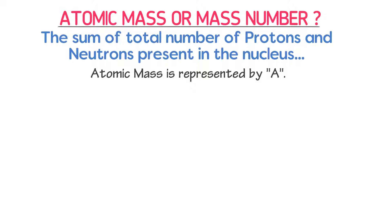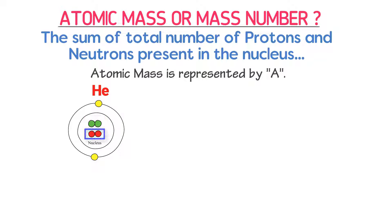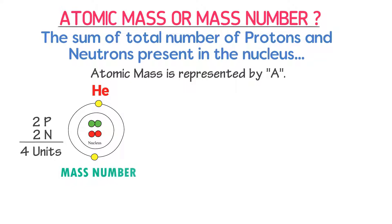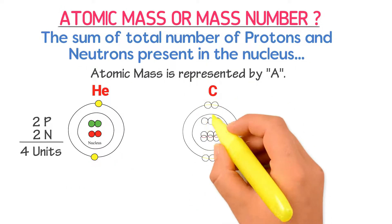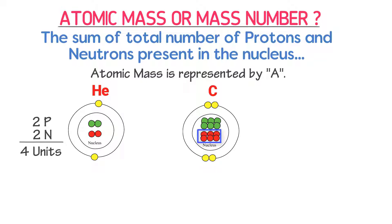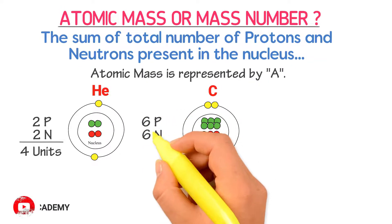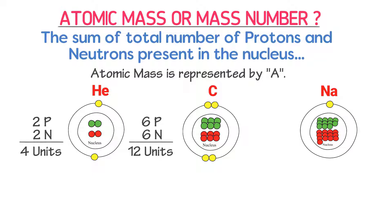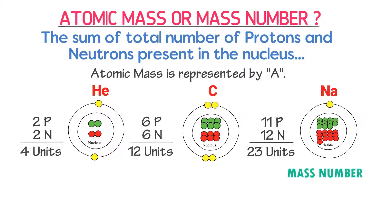Atomic mass or mass number is represented by the symbol A. For example, consider an atom of helium. There are two protons and two neutrons present in the nucleus of helium. 2 plus 2 equals 4, hence the mass number of helium is 4 units. Consider an atom of carbon — there are six protons and six neutrons; 6 plus 6 equals 12, so the mass number of carbon is 12 units. Consider an atom of sodium — there are 11 protons and 12 neutrons; 12 plus 11 equals 23, hence the mass number of sodium is 23 units.